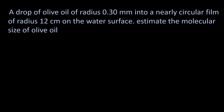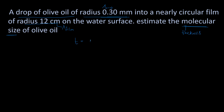Next question on the volumetric method: a drop of olive oil of radius 0.3 mm spreads into a nearly circular film of radius 12 cm. Estimate the molecular size of olive oil. When we talk about molecular size, it means thickness.